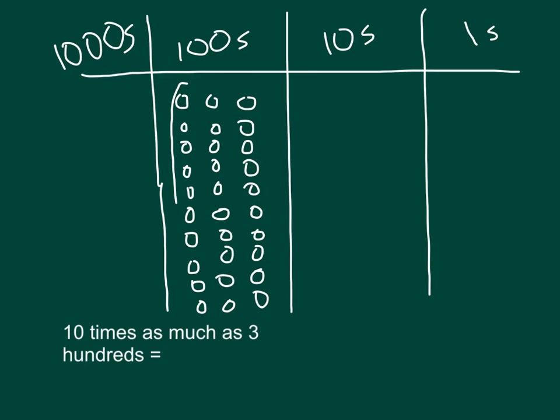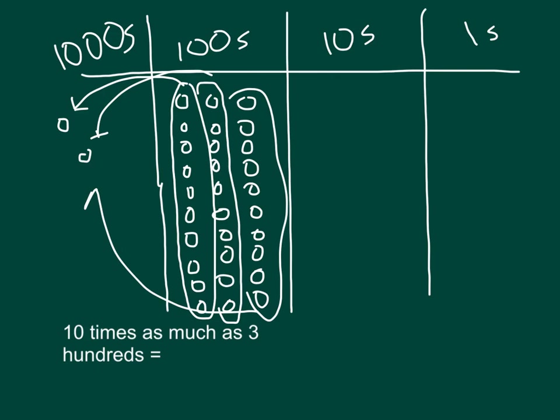And then we can go ahead and regroup those. Every 10 of those hundreds is now worth 1,000. 10 more hundreds is worth 1,000. And these 10 here are also worth 1,000. So the other unit forms that we can go ahead and write there was 10 times as much as 3 hundreds. So that's 30 hundreds, which also was equal to 1, 2, and 3 thousands, which in standard form would be 3,000.